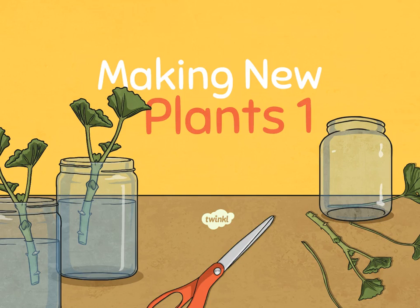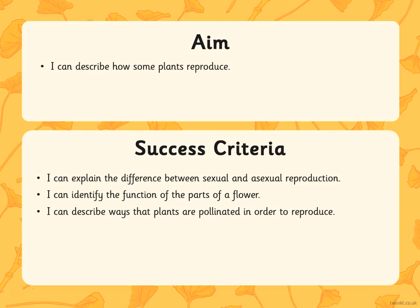Hi and welcome to lesson one of the new Year 5 units of work called Living Things and their Habitats, with a particular focus on the life cycles of animals and plants. In this video you're going to consider the ways that plants reproduce. You'll be successful by the end of this video if you can explain the differences between sexual and asexual reproduction, identify the functions of different parts of the flower, and describe the ways in which plants are pollinated in order to reproduce.